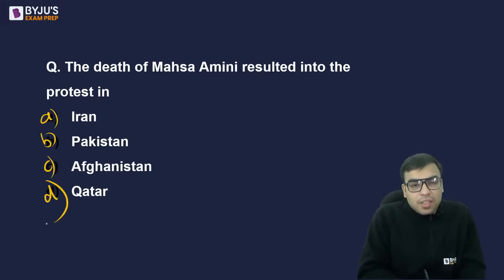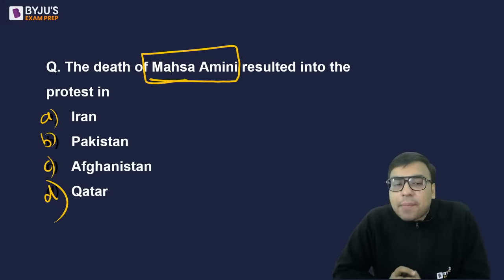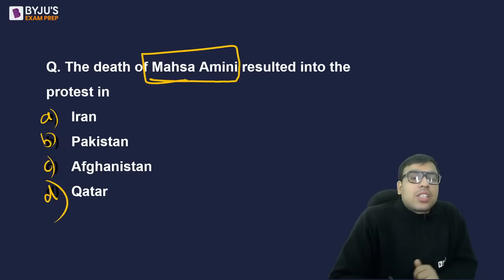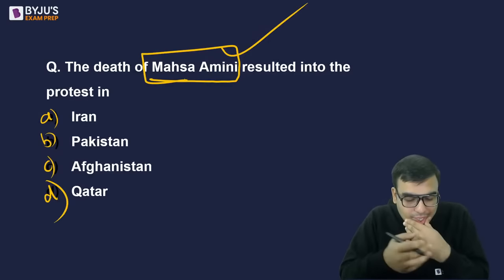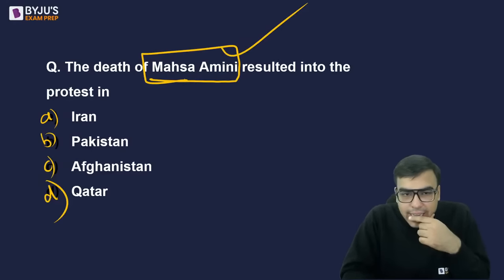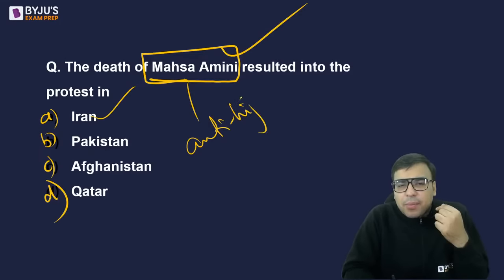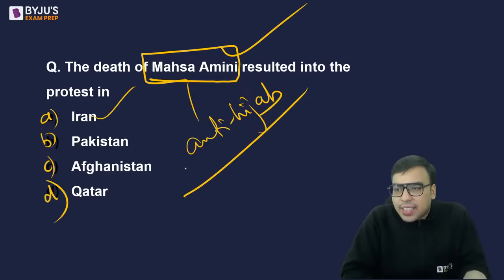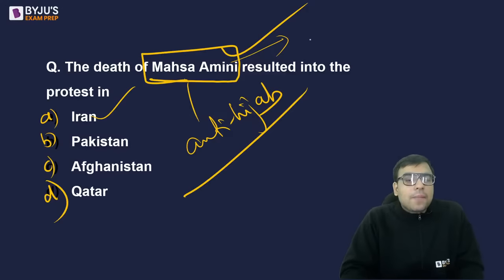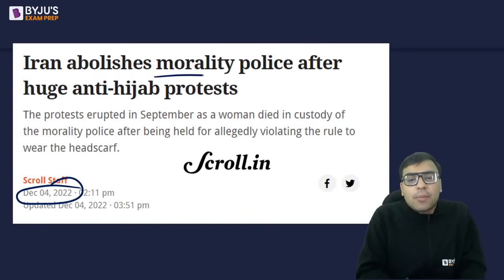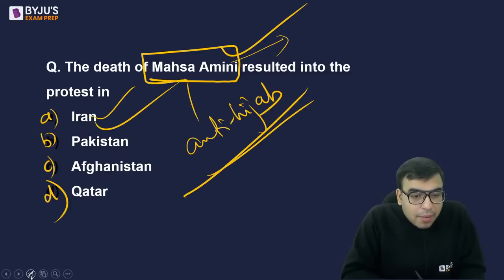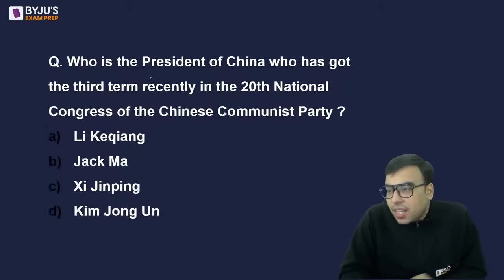The death of Mahsa Amini resulted in protests in which country? Options: Iran, Pakistan, Afghanistan, or Qatar. The right answer is Iran. This became a very famous anti-hijab protest. Mahsa Amini was arrested by police, and there are allegations she died in police custody because she was not wearing proper hijab. The protests became so significant that Iran ultimately had to abolish the morality police in December.